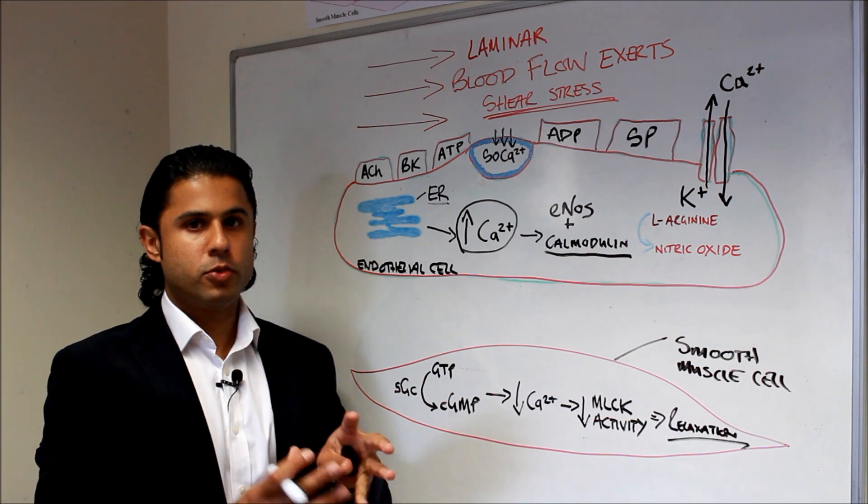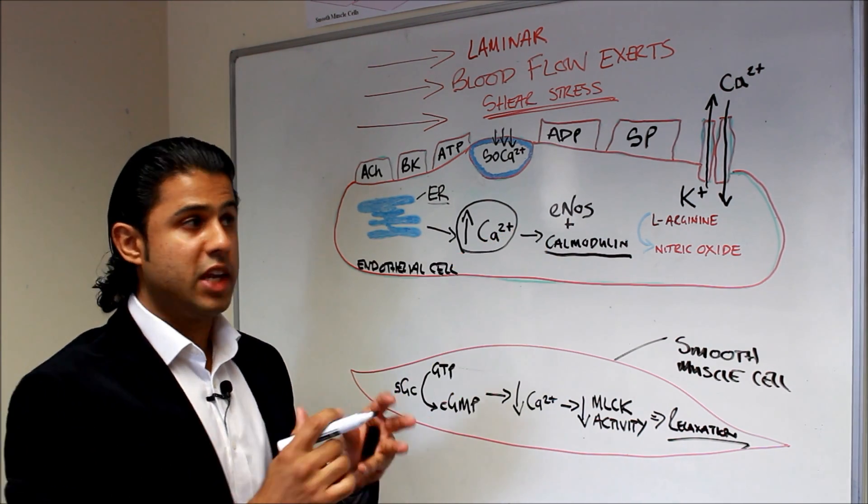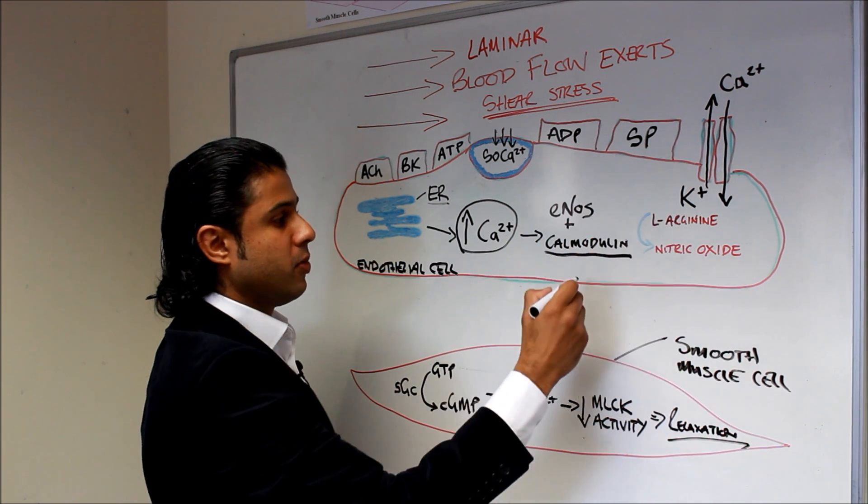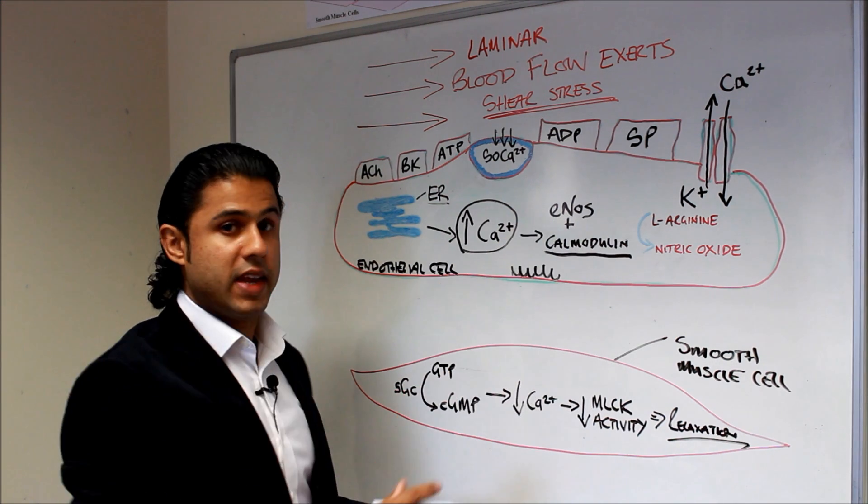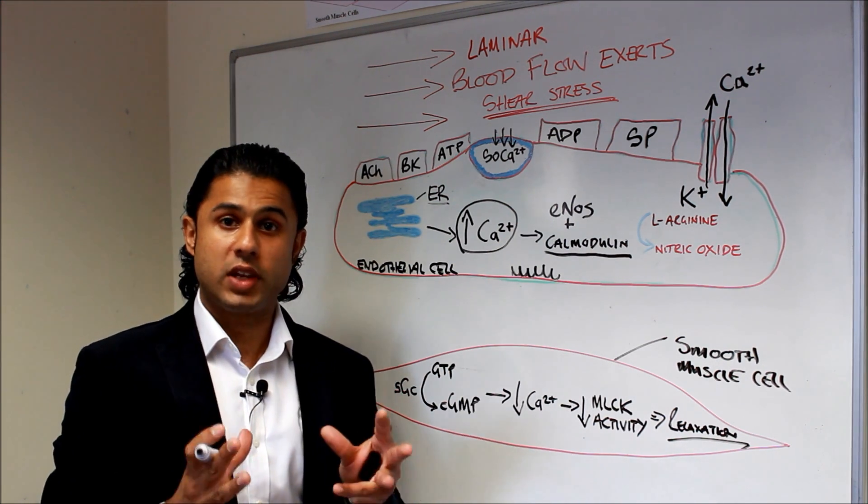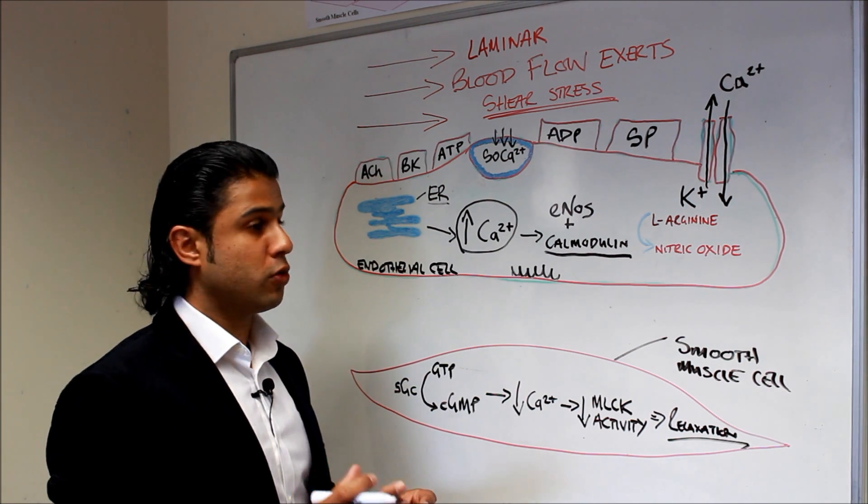Now normally in a blood vessel which is not dilated, ENOS is located on little invaginations in the cell membrane. So we can imagine small little invaginations here which would house the ENOS. Those invaginations are called caveoli, and ENOS is actually bound to a protein called caveolin.